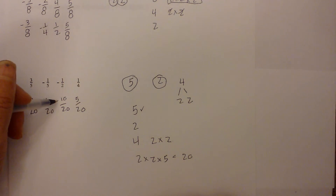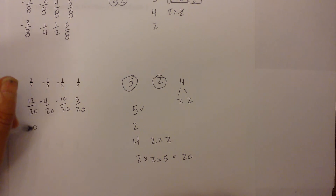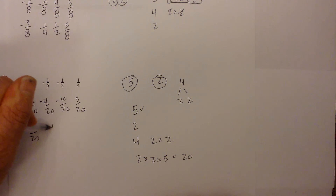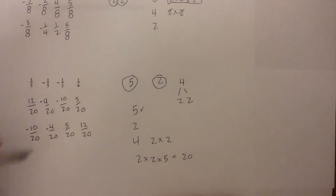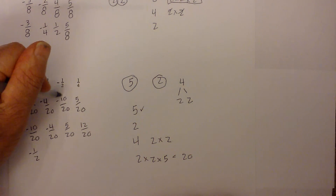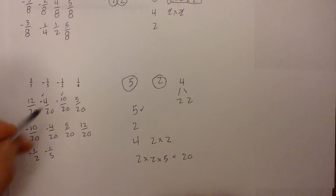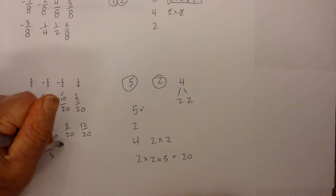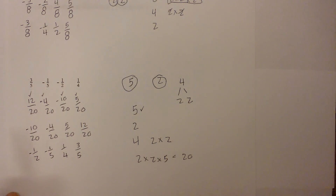Now let's order them. Remember: with negative numbers, the larger the number the smaller it is. So we have: negative ten twentieths, then negative four twentieths, then five twentieths, then twelve twentieths. Writing the original equivalents: ten twentieths is negative one half, negative four twentieths is negative one fifth, five twentieths is one fourth, and twelve twentieths is three fifths.